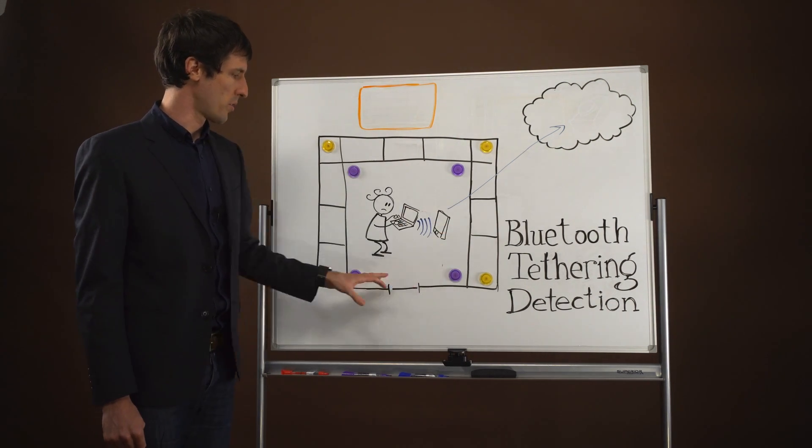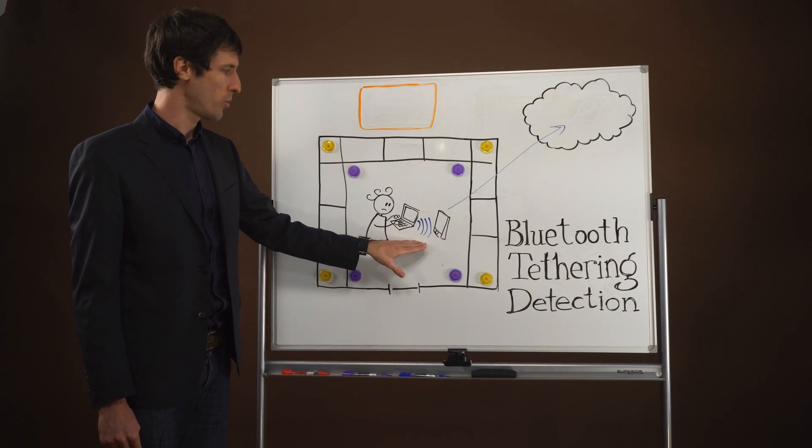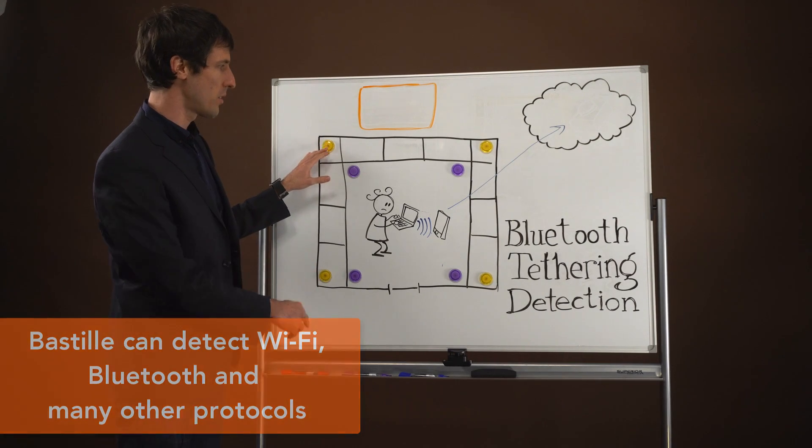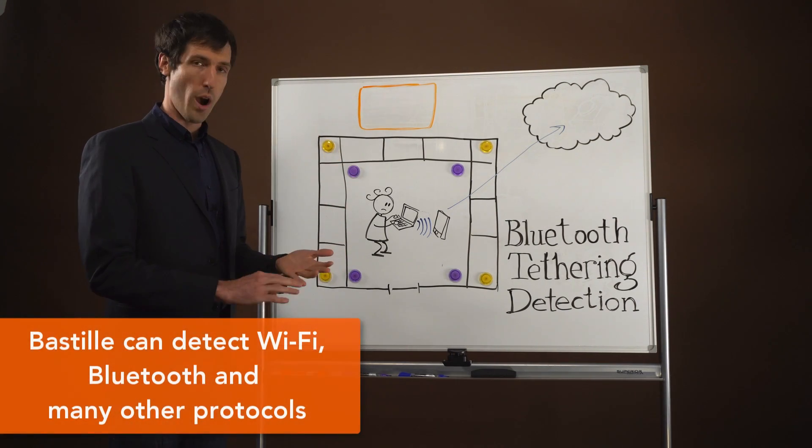The access points speak only Wi-Fi so they wouldn't be able to detect this Bluetooth event. However, with the deployment of the Bastille sensors, they are able to receive Wi-Fi, Bluetooth and many other different protocols.